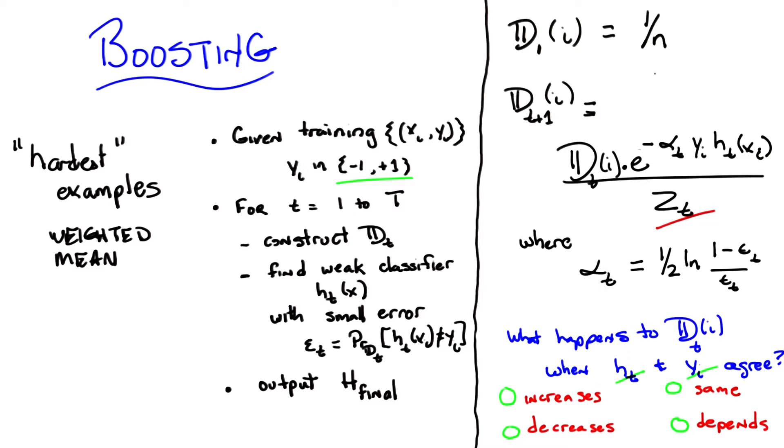But if some of them are correct and some of them are incorrect, the ones that are correct are going to decrease, and the ones that are incorrect are going to increase. That's right.